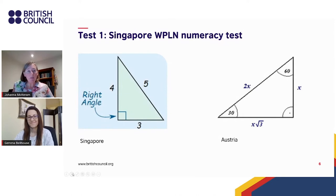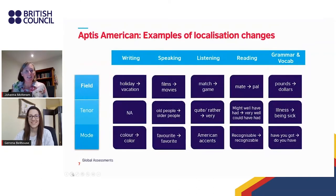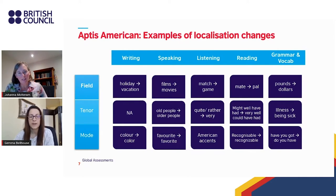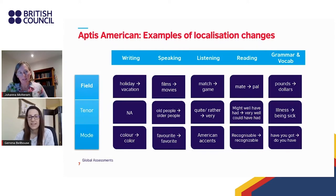I'll hand over to Gemma now to talk about APTIS American in detail. For the second localisation project, I'll walk through some examples of the changes we made to the test content. This was also based on APTIS General, just as in the WPLN project. As this project was a test for South America, it was named APTIS American — a case of taking British English and adapting it for a purely American context.